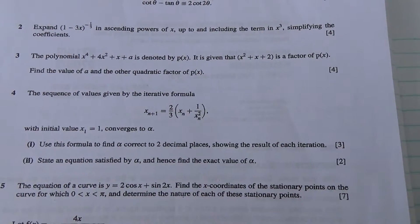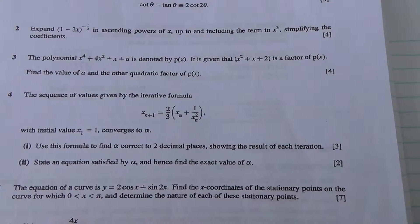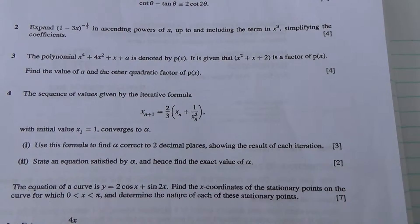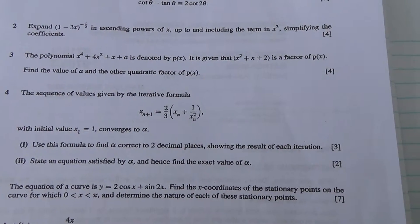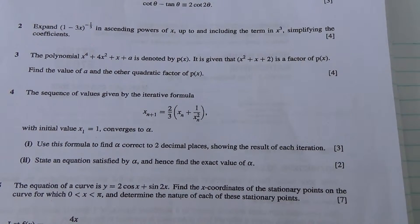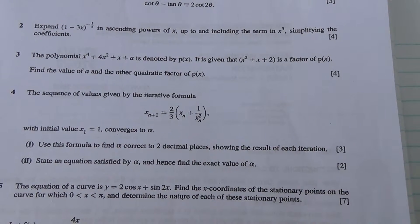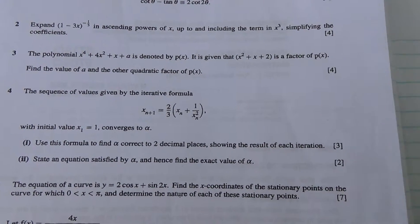The sequence of values given by the iterative formula x sub n plus 1 is equal to 2 thirds times x sub n plus 1 over x squared sub n with initial value x1 is equal to 1, converges to alpha.